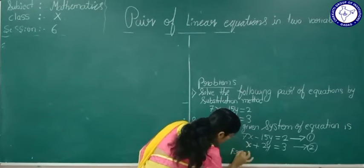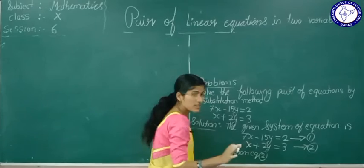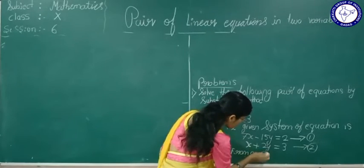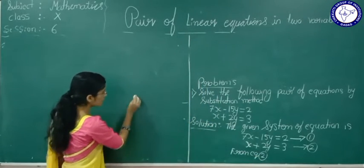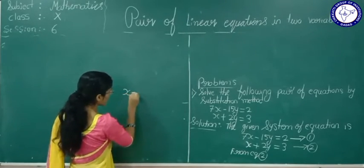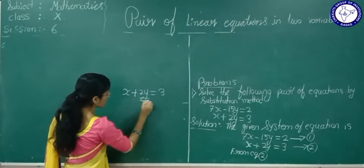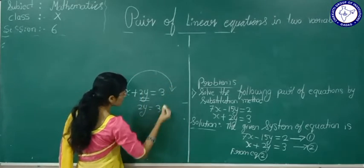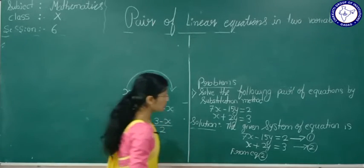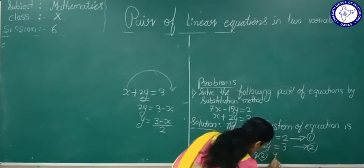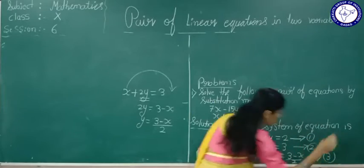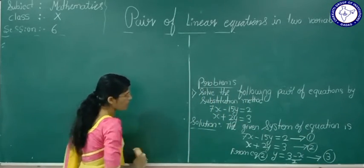Both approaches are valid — you can interchange the roles of x and y. There is no rule that you must take equation 2 only; from any one equation you can take. From equation 2, I will express y in terms of x. Equation 2 is x plus 2y equals 3. Keeping 2y on one side: 2y equals 3 minus x, so y equals (3 minus x) divided by 2. Call this equation 3.